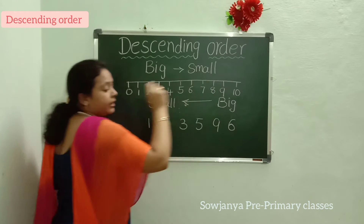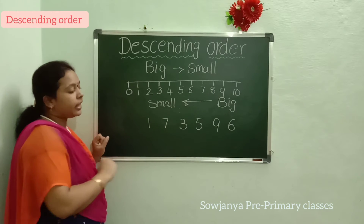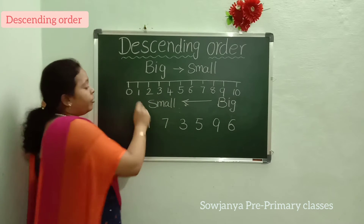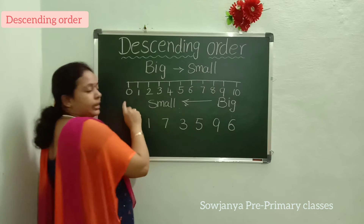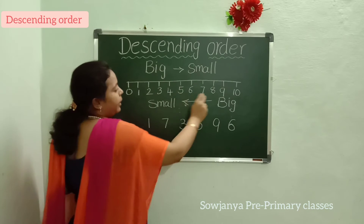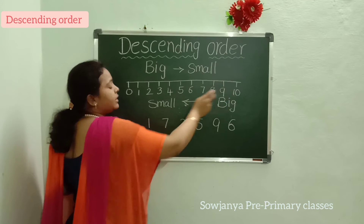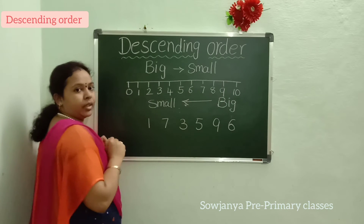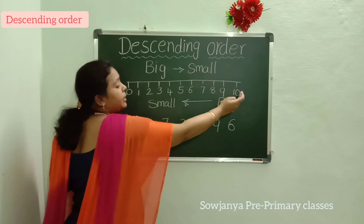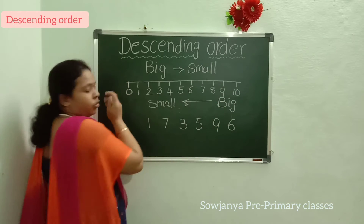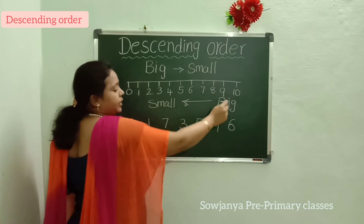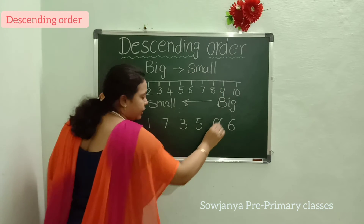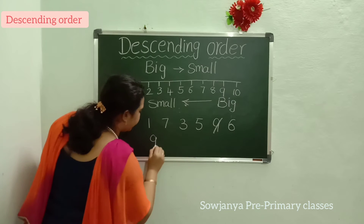In this, which is the big number? Can you say which is the big number? First we have to observe on the number line. Big number means we have to start from 10 to 1. Which is the big number from these numbers? Yes, 9. Now, cross the 9 and write here 9.